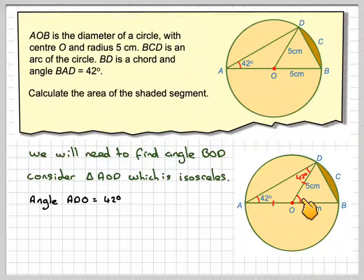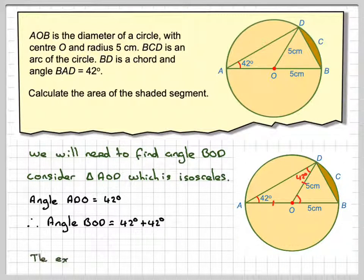Now, this angle here, which is an exterior angle of triangle AOD, is equal to the sum of the two interior angles. So angle BOD will be equal to 42 plus 42.